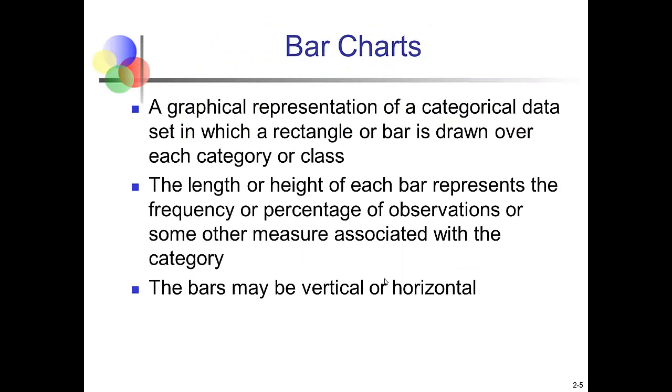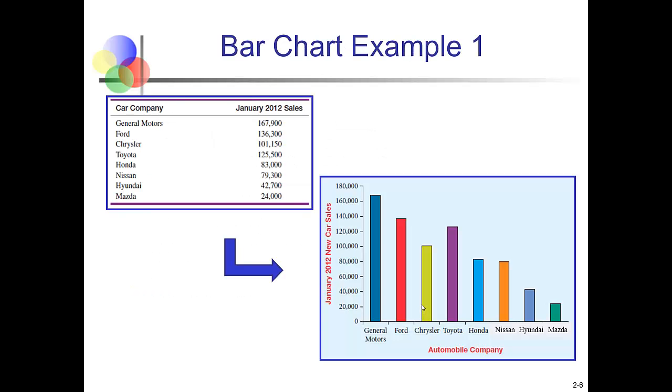Bar charts, as you may recall, typically present categorical data where the bars represent the relative importance or some other measure of that data. The bars can be vertical or horizontal. Here's an example of a bar chart.